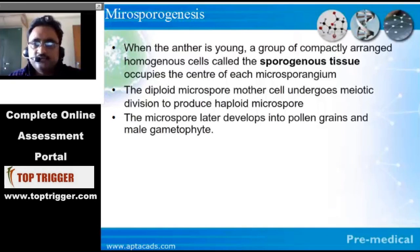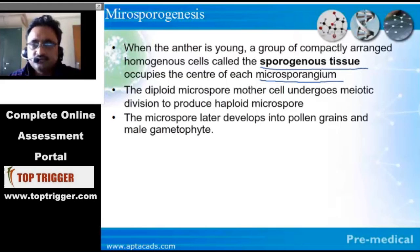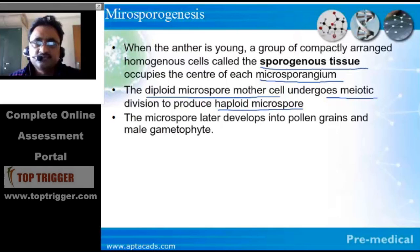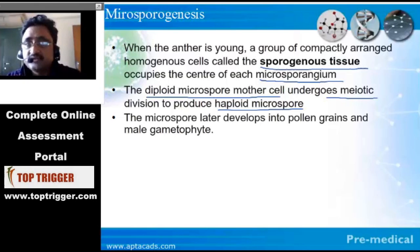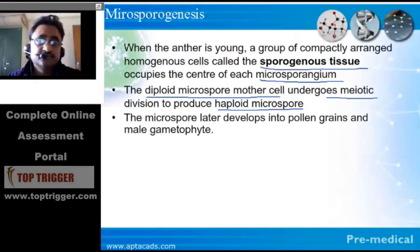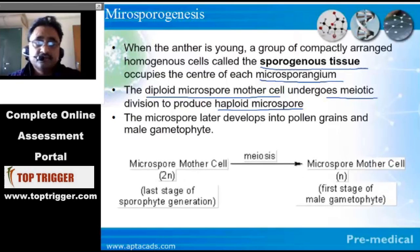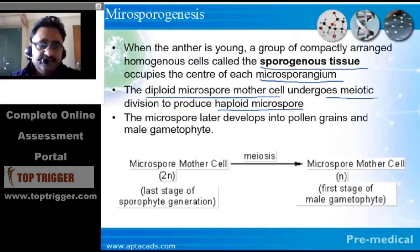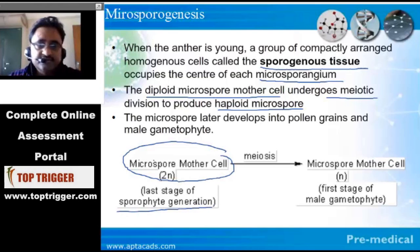The tissue from where the process starts is called sporogenous tissue, which occupies the center of each microsporangium. In the course of development, it forms the diploid microspore mother cell, which undergoes meiotic division to form haploid microspores. The formation of haploid microspores from the diploid microspore mother cell is called microsporogenesis. Later on, the microspore develops into pollen grains and the male gametophyte. The microspore mother cell is the last stage of the sporophytic generation in angiospermic plants.